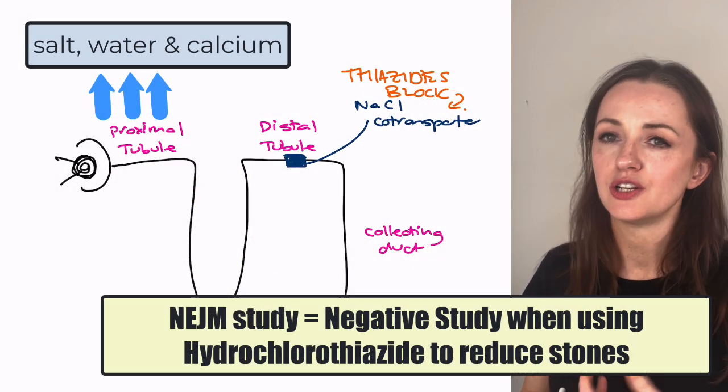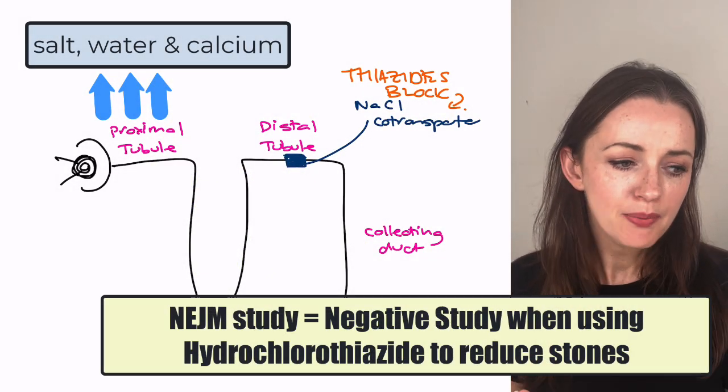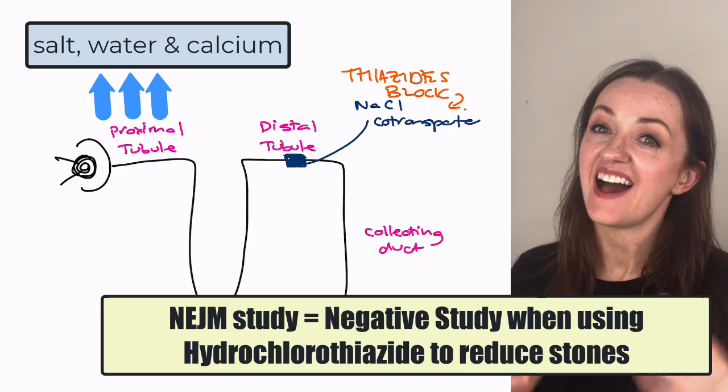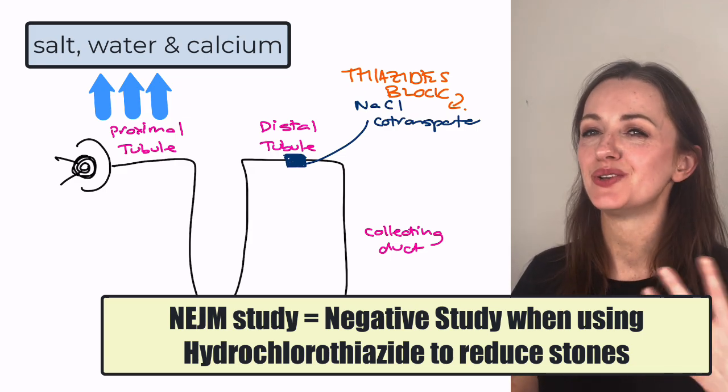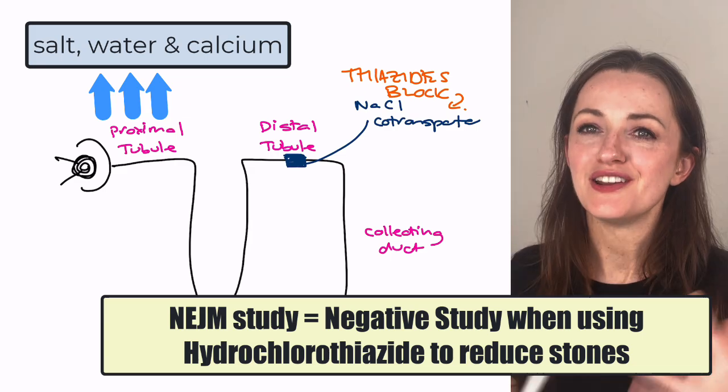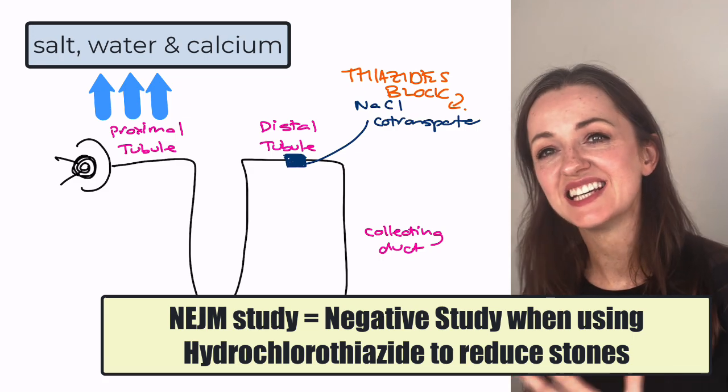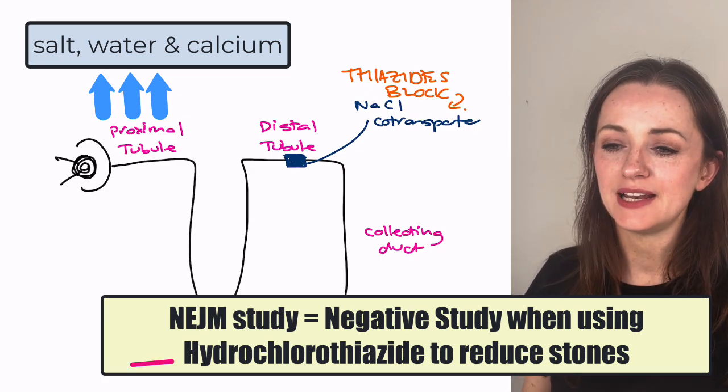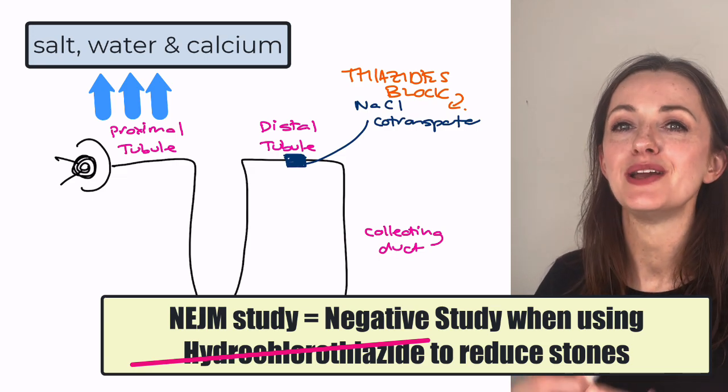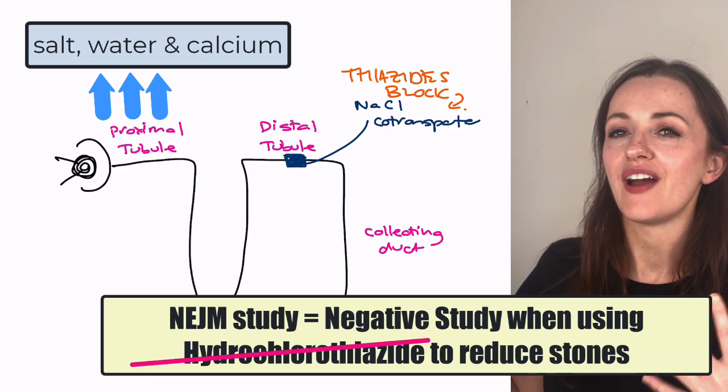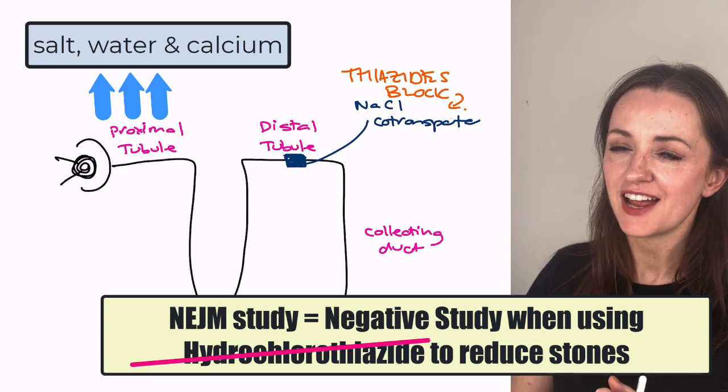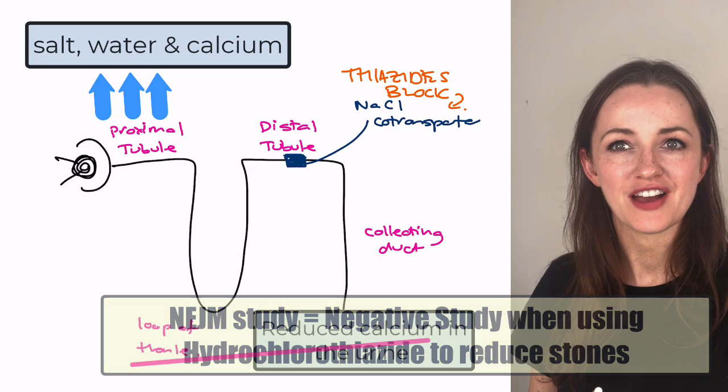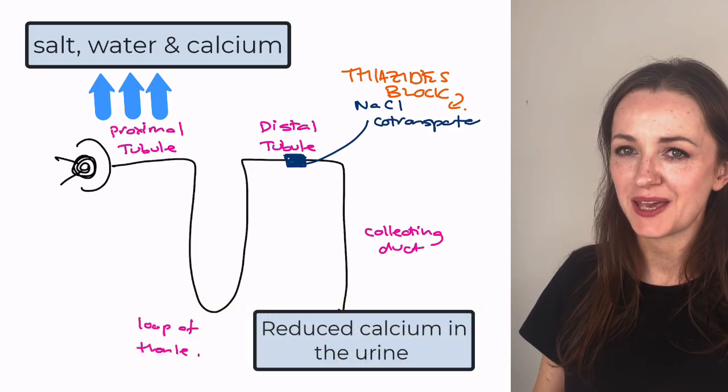Now there was a New England Journal of Medicine paper which had looked at hydrochlorothiazide in stones but there were lots of criticisms of that paper. Nephrologists are still using this side effect to treat people with stones but they're not using hydrochlorothiazide. They might use some other more longer acting thiazide diuretics such as indapamide or chlorthalidone is the current thinking.